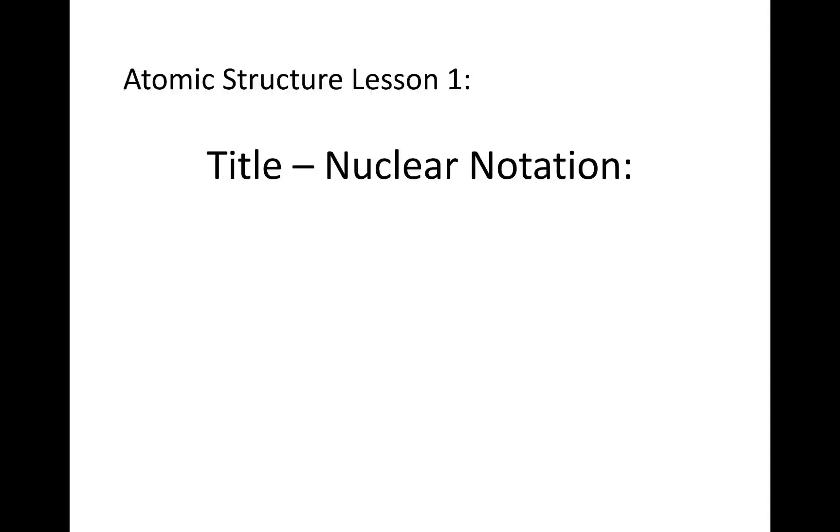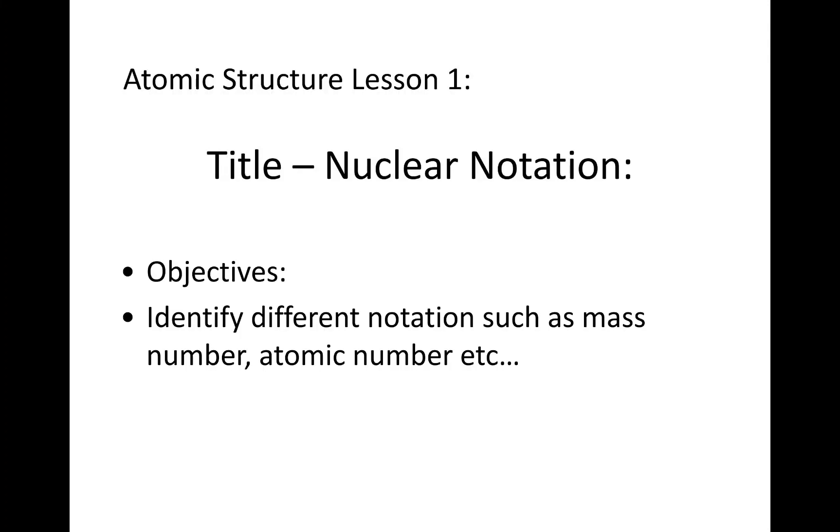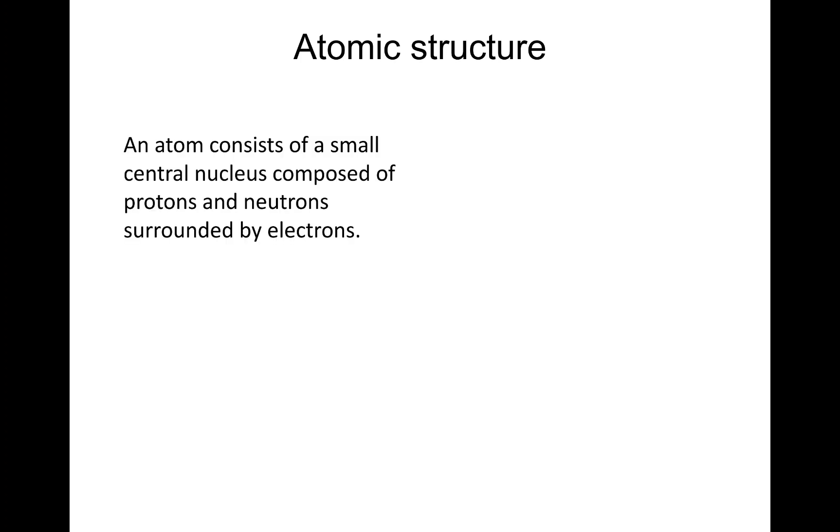Hi there, this is GCSE Physics, Atomic Structure Lesson 1. The title is Nuclear Notation. The objectives are to identify different notations such as mass number, atomic number, etc. It'll all become clear once we've gone through them. And then we're going to make some calculations regarding nuclear notation. Remember you're going to need to pause at different points of this video to make notes.